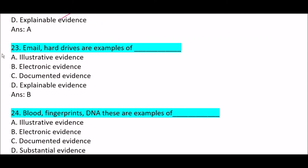Next question: email and hard drives are examples of — Option A: illustrative evidence. Option B: electronic evidence. Option C: documented evidence. Option D: explainable evidence. Correct answer is Option B — electronic evidence. Email and hard drives are examples of electronic evidence.